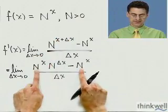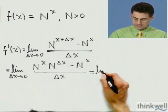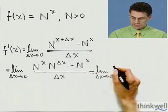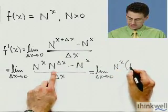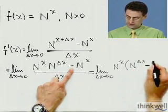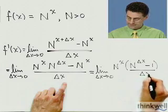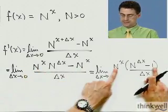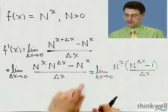Now notice I have a common factor of N^x. So I factor that out, and I'm left with N^Δx minus 1. Remember, you're supposed to be watching me and following, but I'm doing all the work. I factored that common factor out and got that minus 1. If I distribute, I get N^x.